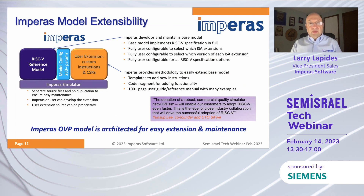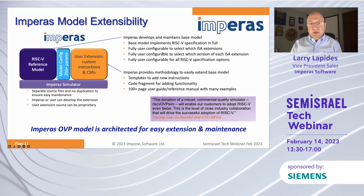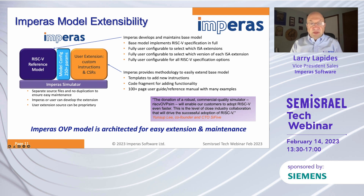Back to the models and especially extensibility. Here's the model architecture running on the Empiris simulator engine. Again, we're supporting the full base model, fully configurable to select extensions and versions. Now we can add custom instructions — Empiris can add them, or users can add them, because we've got templates, code fragments, and documentation that makes it easy to do this.